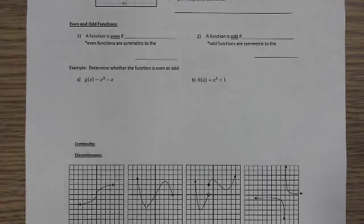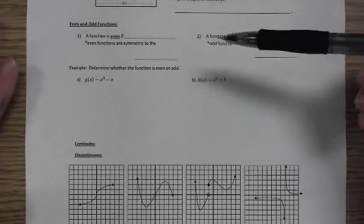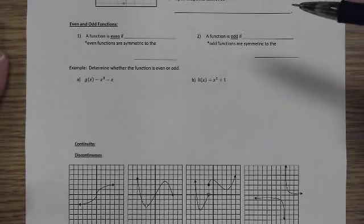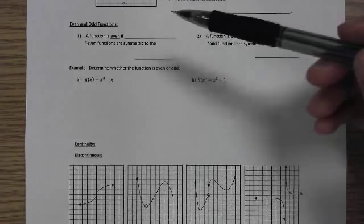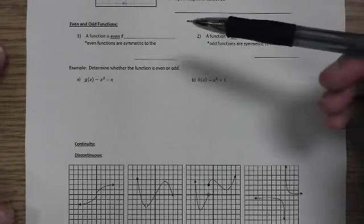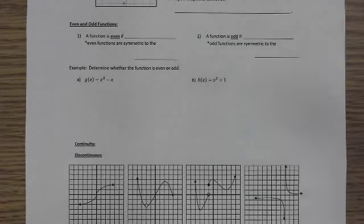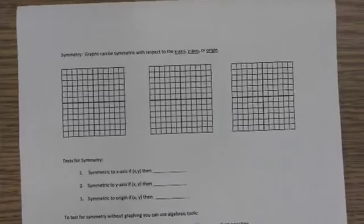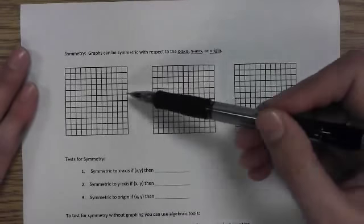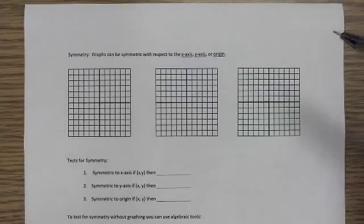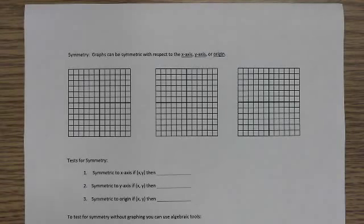This next video is a continuation of finding characteristics of polynomial functions — some characteristics you probably have not found before. The first we're going to look at is whether or not the polynomial function is an even function or an odd function. We're going to flip to the back page where it says symmetry and talk about some symmetry so that we can refer to it when we talk about even and odd.